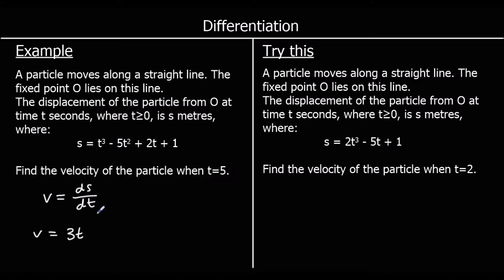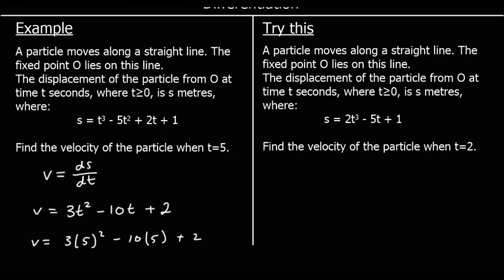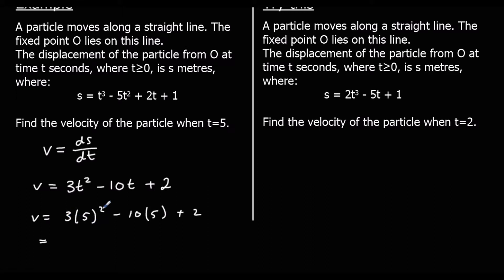take one off the power: 3 minus 1 is 2. Negative 5t squared times by the power gives negative 10, and 2 minus 1 is 1. For 2t, the gradient is 2. And 1 has got no gradient. So our velocity is 3t squared minus 10t plus 2. When t is 5: 3 times 25 minus 10 times 5 plus 2 gives 75 minus 50 plus 2, which is 27 meters per second.